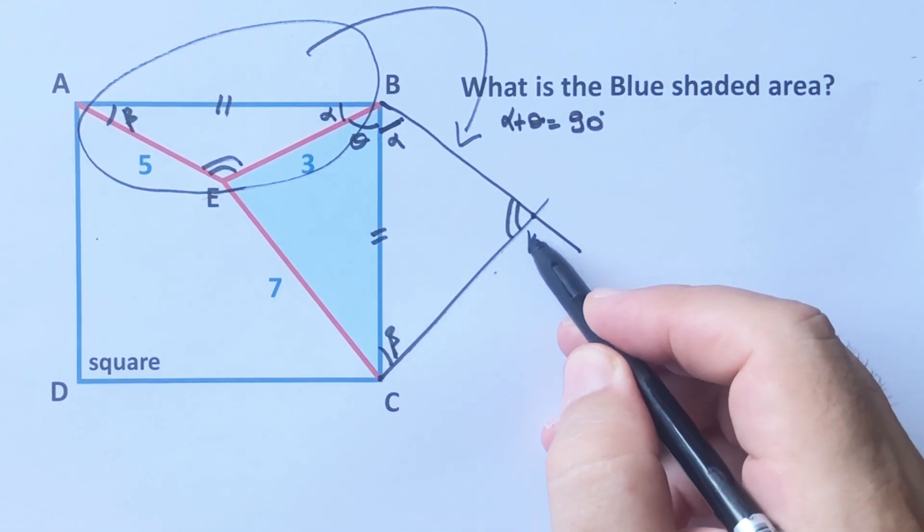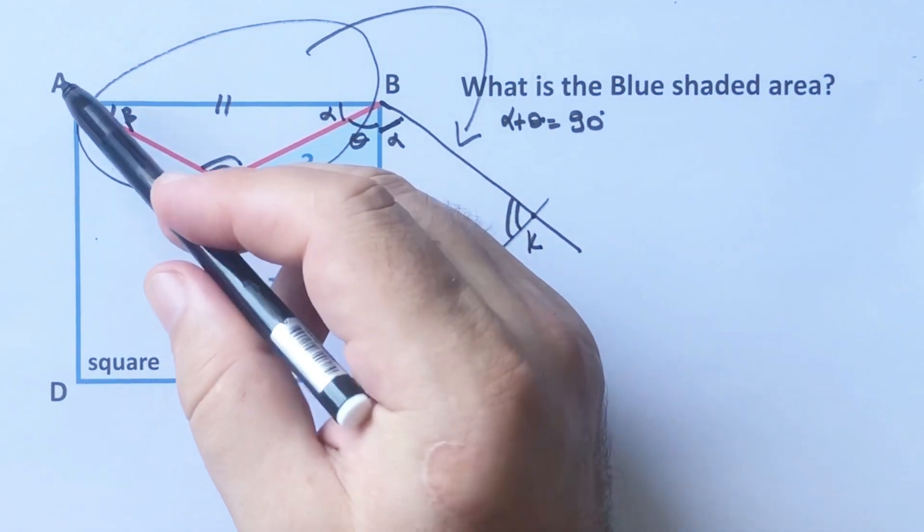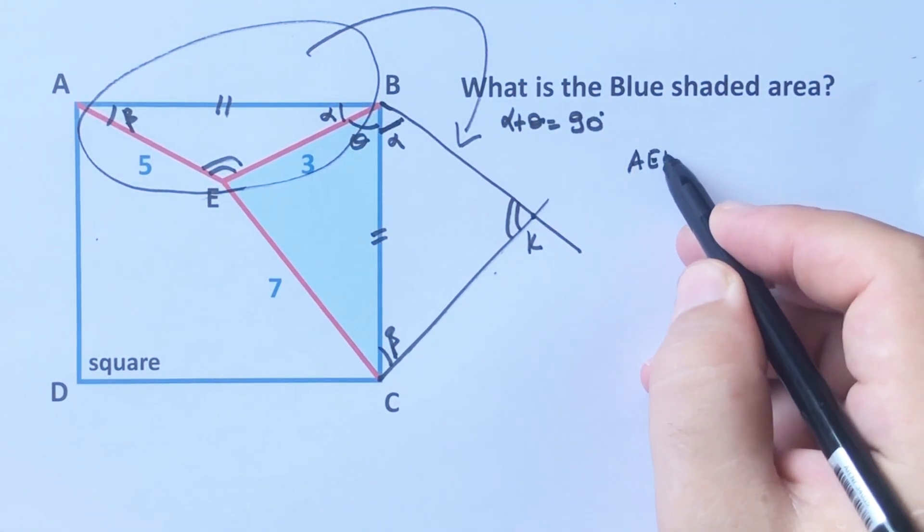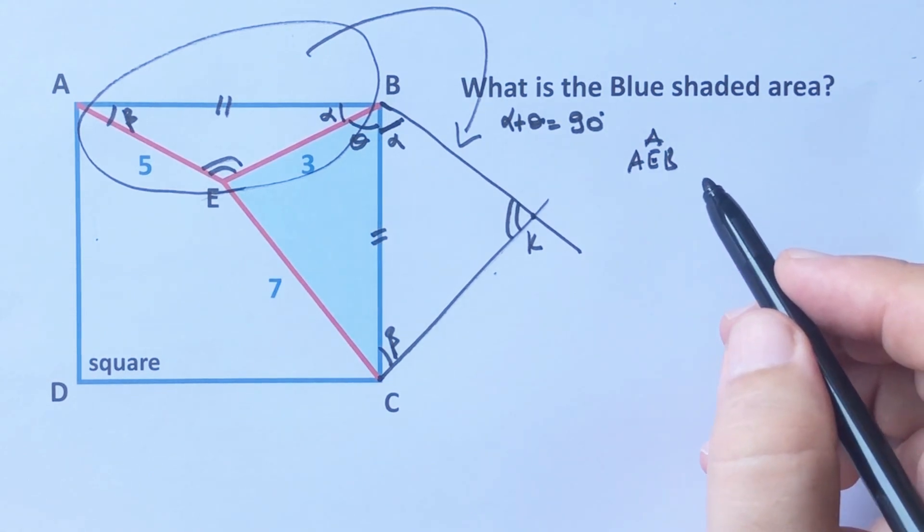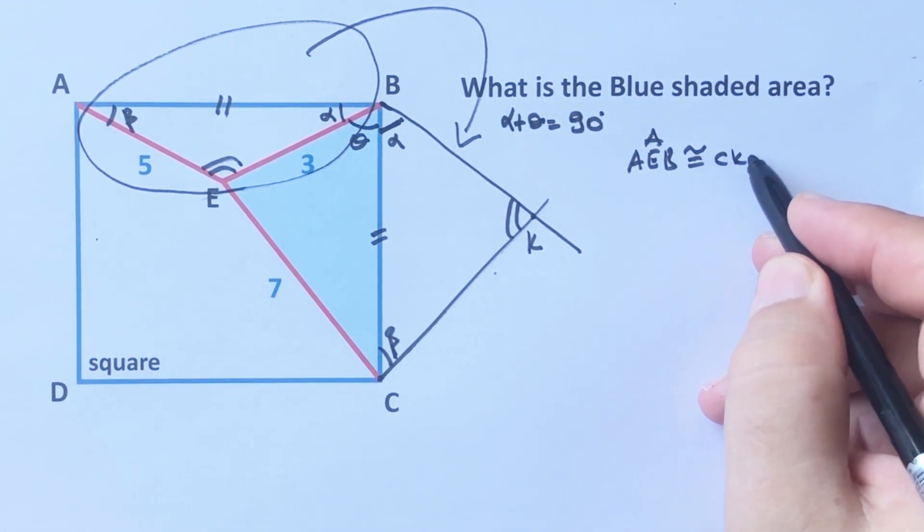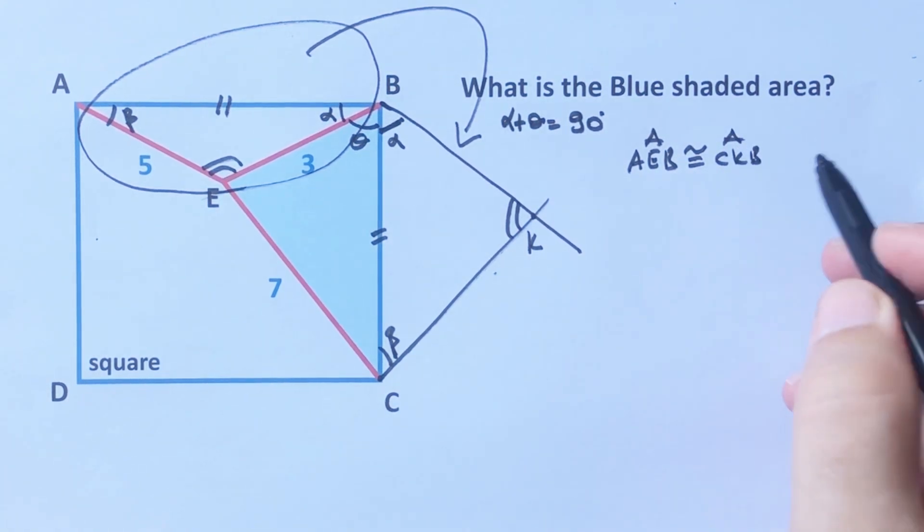Okay, let's call here K point. Therefore AEB triangle and CKB triangle are congruent. So we know that congruent triangles have same sides and angles.